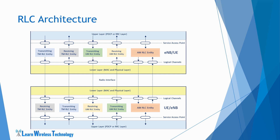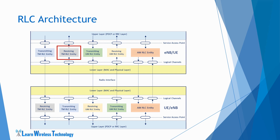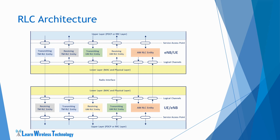An RLC entity is categorized as a transparent mode RLC entity, unacknowledged mode RLC entity, or acknowledged mode RLC entity, depending on the RLC mode used for data transfer. The transparent mode RLC entity can be configured either as a transmitting or a receiving RLC entity. When configured as a transmitting entity, it receives RLC SDUs from the upper layer and sends them as RLC PDUs via the lower layers to its peer receiving RLC entity. When configured as a receiving entity, it delivers the RLC PDUs to the upper layers received from its peer entity via lower layers. Similarly, the unacknowledged mode RLC entity is also configured either as transmitting or receiving, and PDU transfer works the same way.